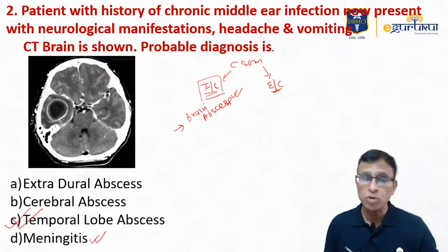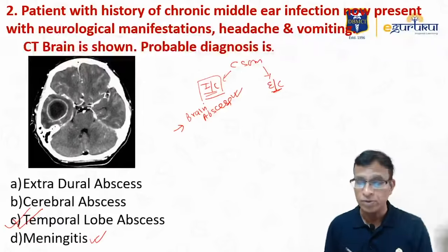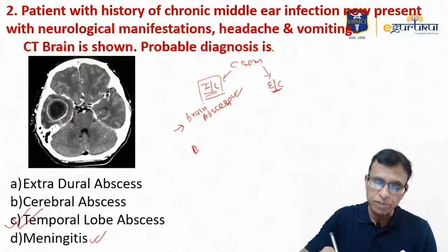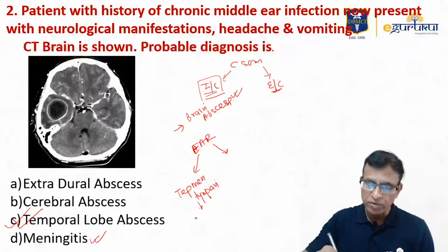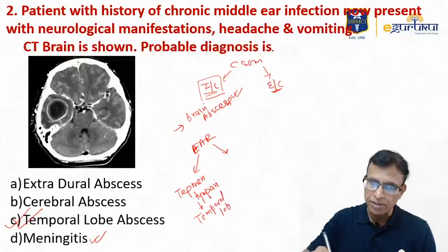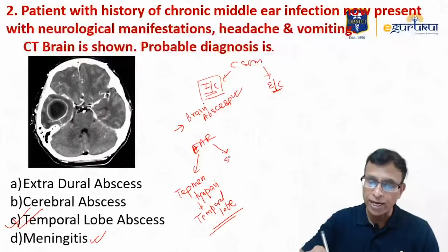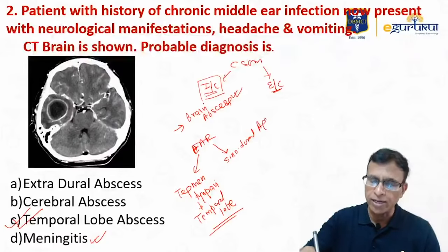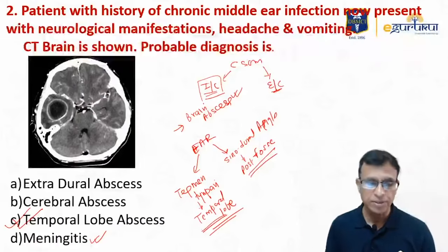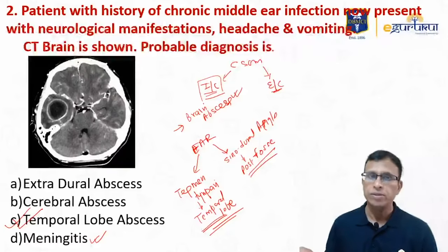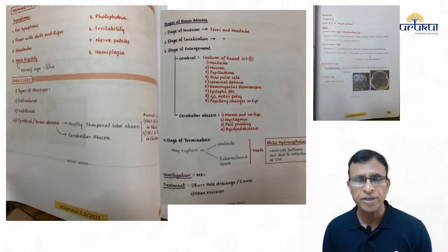If you ask the reverse question — what is the most common cause of brain abscess — the answer is CSOM. From the ear, the pathogen enters the cranial cavity either through the tegmen tympani (the roof of the ear), causing a temporal lobe abscess, or through the sinodural angle, which usually causes a posterior fossa abscess. Both are possible. Surgery is required in most cases. This is a popular question and is well referenced in the eGrukul PDF.